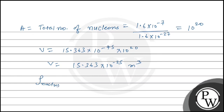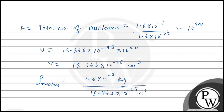Density of nucleus = mass / volume = 1.6×10⁻⁷ kg divided by 15.363×10⁻²⁵ m³. Solving this gives density of nucleus = 0.1041×10¹⁸ = 1.041×10¹⁴ kg/m³.